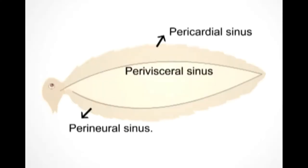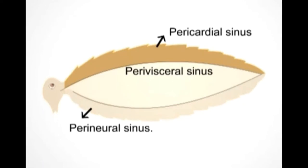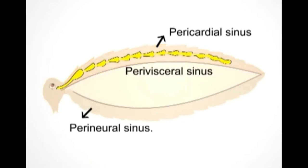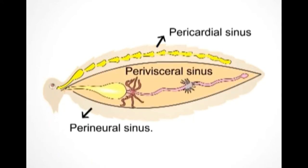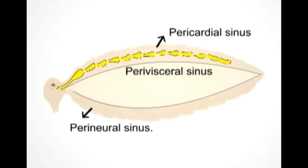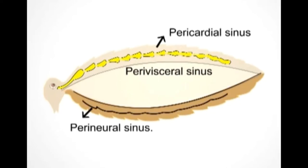The body cavity of cockroach is divided into three chambers or sinuses. The dorsal sinus is also called the pericardial sinus; heart is present in the pericardial sinus. The middle sinus consists of visceral organs, hence is called the perivisceral sinus. And the ventral sinus surrounds the ventral nerve cord, hence it is called the perineural sinus.